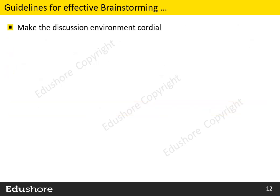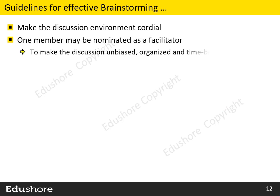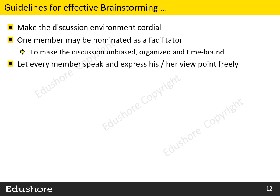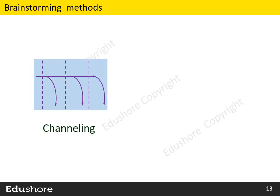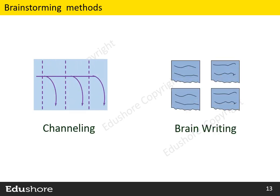We should make the discussion environment cordial. One member may be nominated as a facilitator to make the discussion unbiased, organized, and time-bound. We should let every member speak and express his or her viewpoint freely, and we should not reject any viewpoint in this meeting. All these guidelines make the brainstorming discussions very effective. There are two methods or approaches for brainstorming in the Improve Phase: Channeling and Brainwriting. We may follow any approach to explore solutions for the root causes of our Project Y.